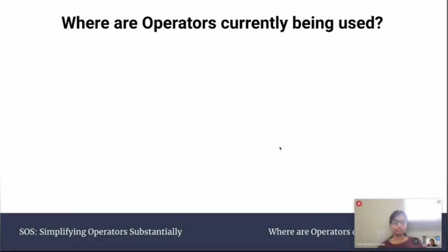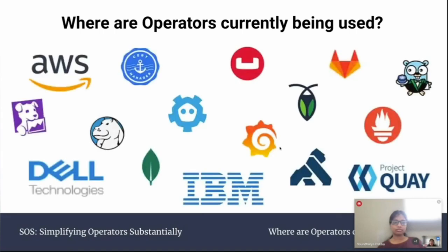Where are operators currently being used? Operators are being used all over the place — AWS, PostgreSQL, Dell, GitLab, IBM, Prometheus, Grafana. There's a whole variety of operators available on Operator Hub. There's a whole library of operators you can utilize and even use to create your own operator — like the L5 operator, which used the PostgreSQL operator for its database. Using existing operators makes creating new operators easier, and building more operators helps the community as well.